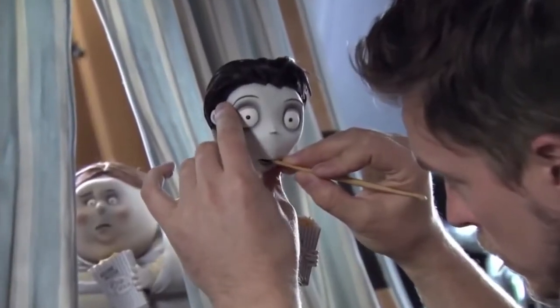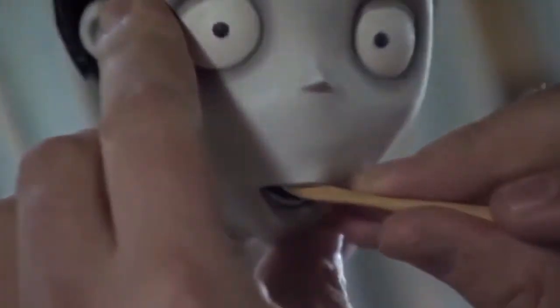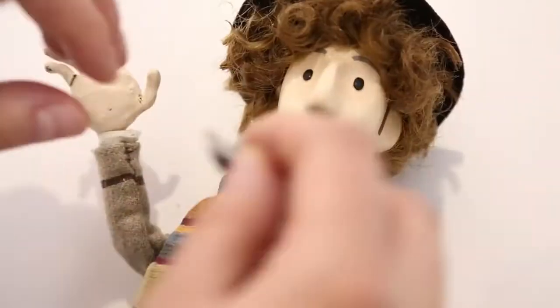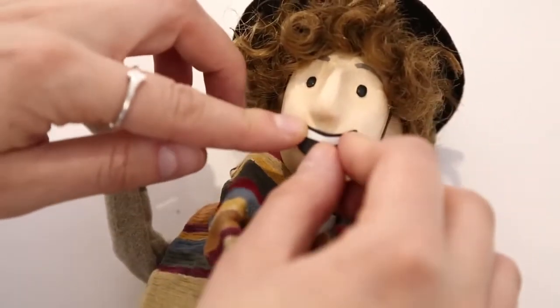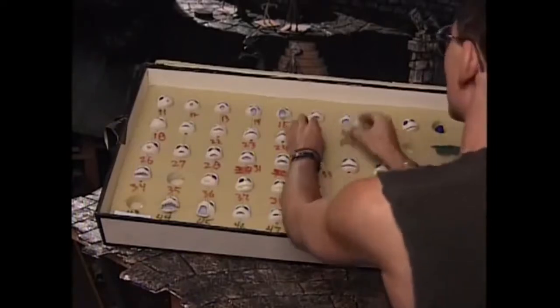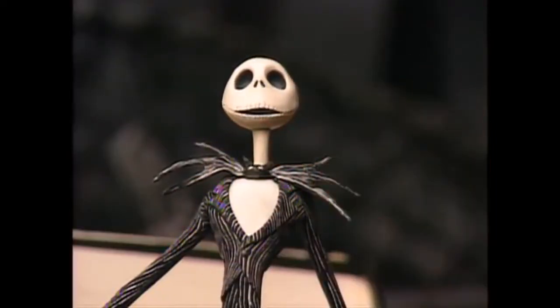Some puppets are built with mouths that can open, but many aren't. To get the fullest range of mouth and facial expression, replacement parts are often used instead. This can be as simple as using stickers for the mouths or as complicated as swapping the entire head with a new one. That's how Jack was able to sing and change emotion in The Nightmare Before Christmas.